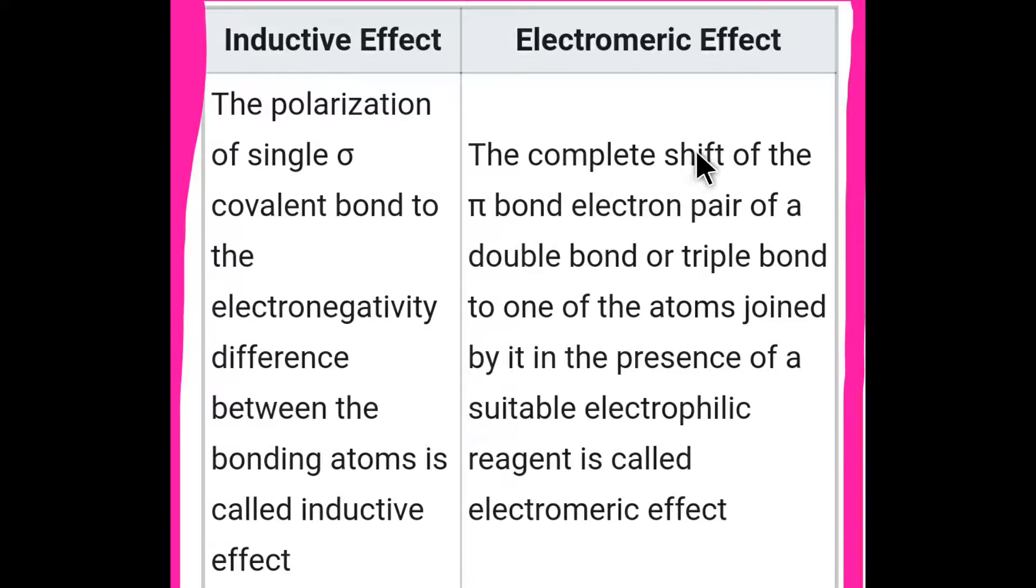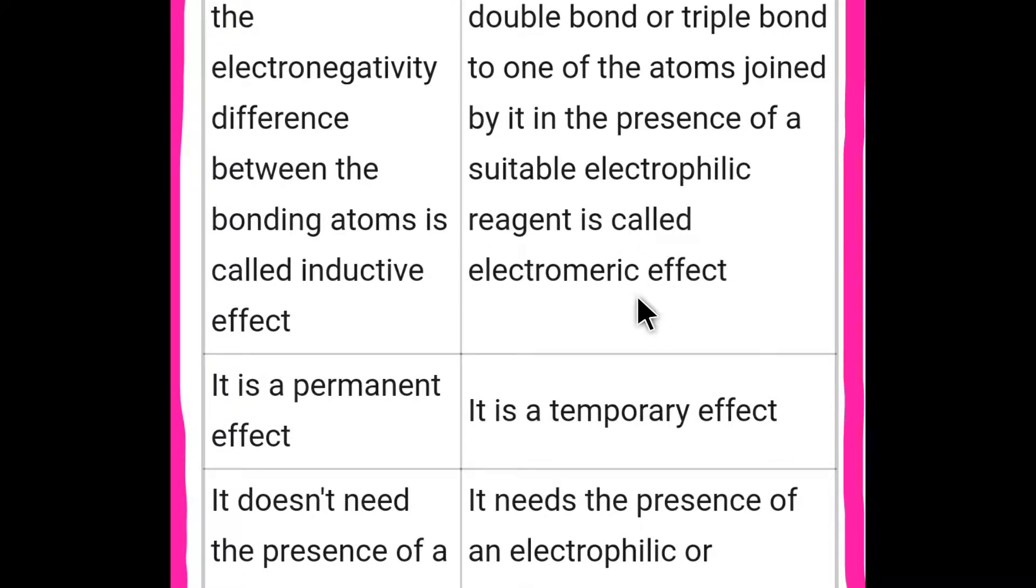On the other hand, the complete shift of the pi bond electron pair of a double bond or triple bond to one of the atoms joined by it in the presence of a suitable electrophilic reagent is called electromeric effect.